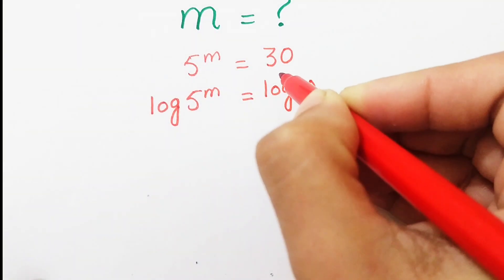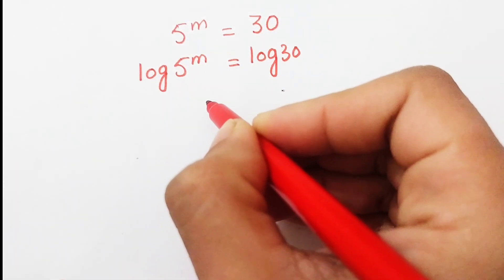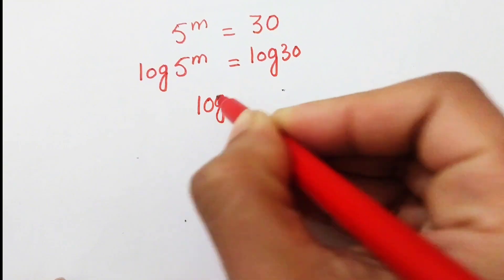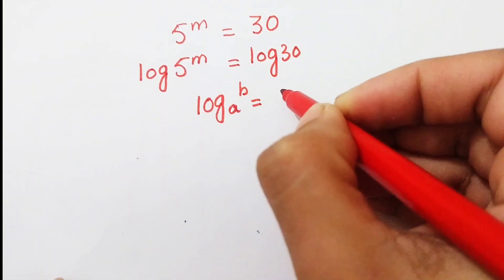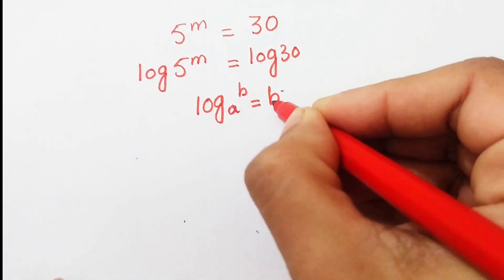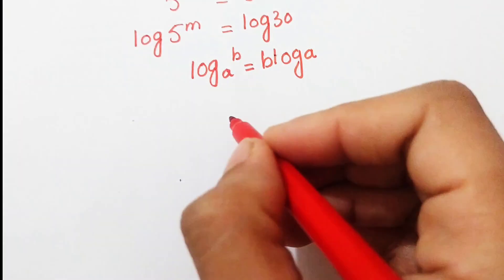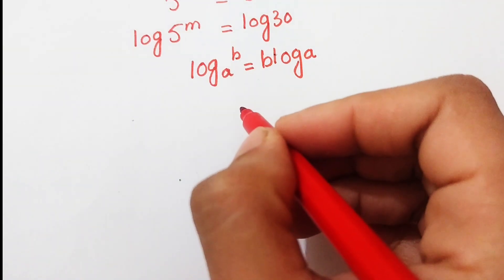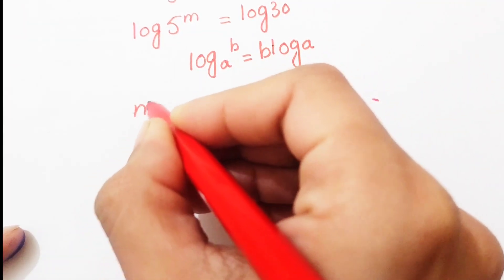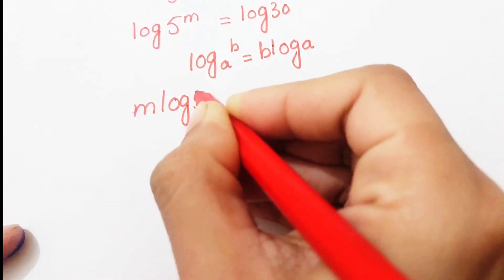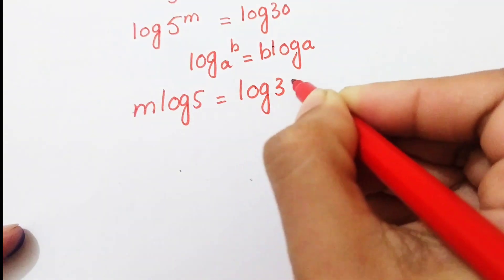After that we apply the property of log: log(a^b) equals b·log(a). We apply this to the above equation and write it as m·log5 equals log30.